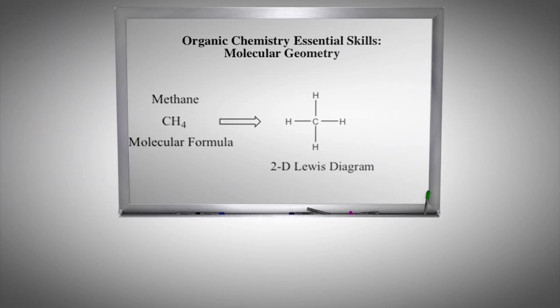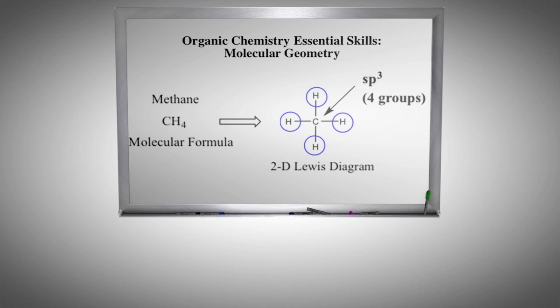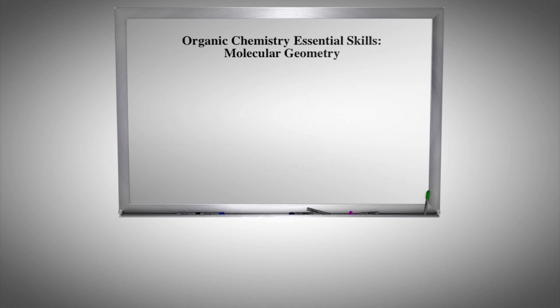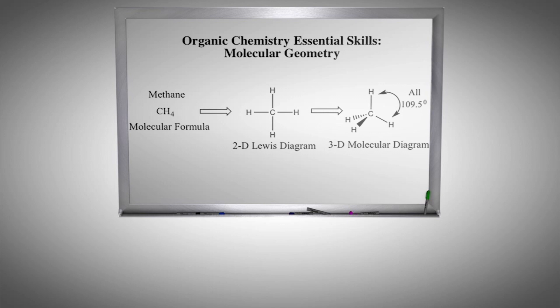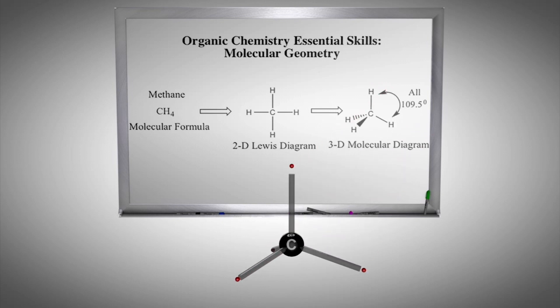An example of a simple carbon compound with the sp3 hybridized carbon is methane. To visualize the molecule in three dimensions, one simply counts the groups on the central atom, which has four groups around it, employing an sp3 hybridized building block. The ideal bond angles are all 109.5 degrees, due to all four equal-sized hydrogen atoms attempting to get as far away from each other as possible to minimize repulsions. Your instructor will often draw three-dimensional methane on the blackboard as shown.